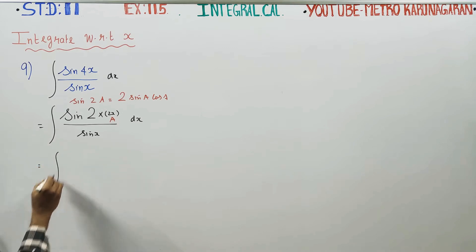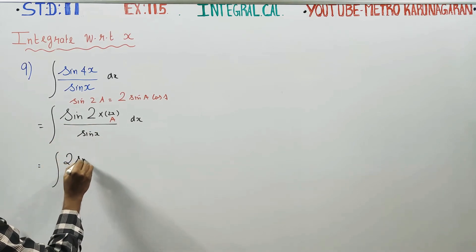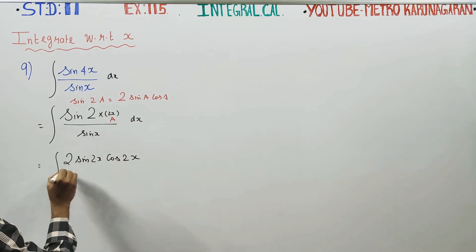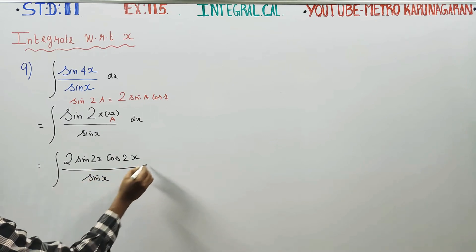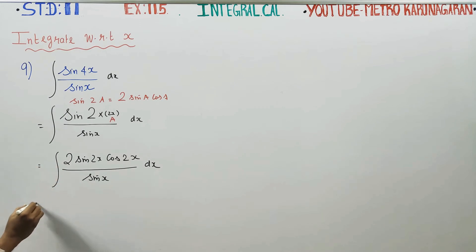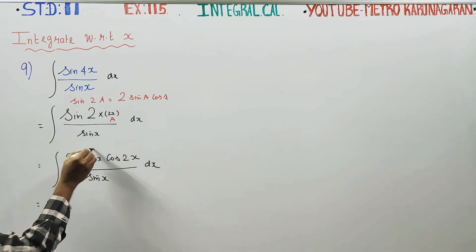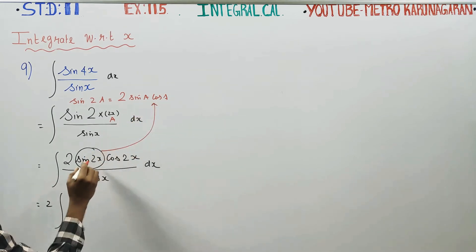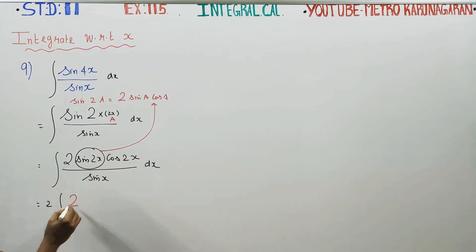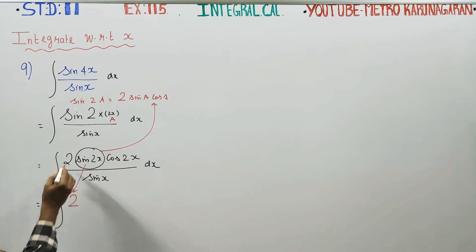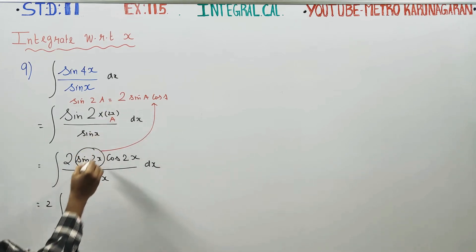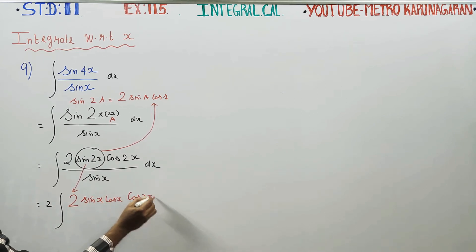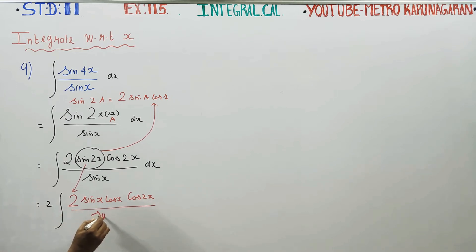Applying the concept, sin 4X can be written as 2 sin 2X cos 2X. Then sin 2X is again expanded using the same double angle formula: 2 sin X cos X. So we get 2 times 2 sin X cos X times cos 2X, all divided by sin X, dx.